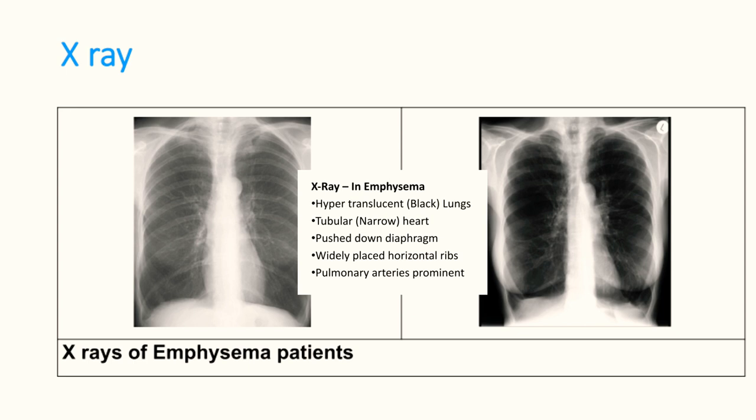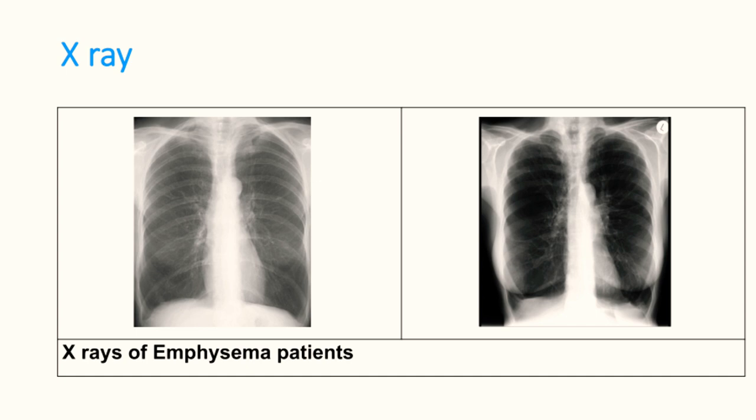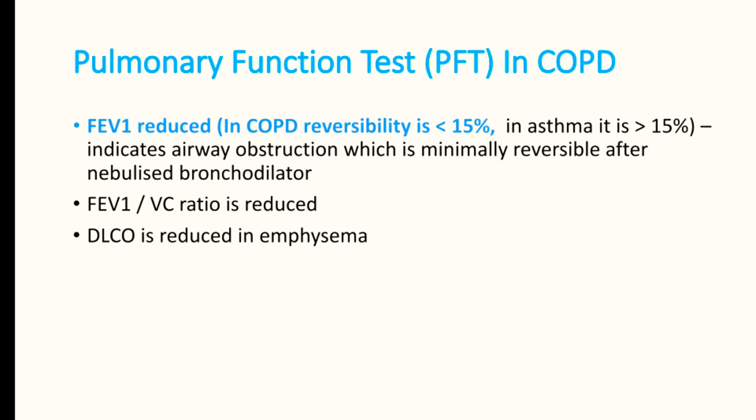Pulmonary arteries can be very prominent on X-ray. The classical feature of emphysema on X-ray is blacker, more hypertranslucent lungs. For any COPD patient, the best investigation of choice is the pulmonary function test, once the patient is stabilized, as it cannot be performed in acute conditions.